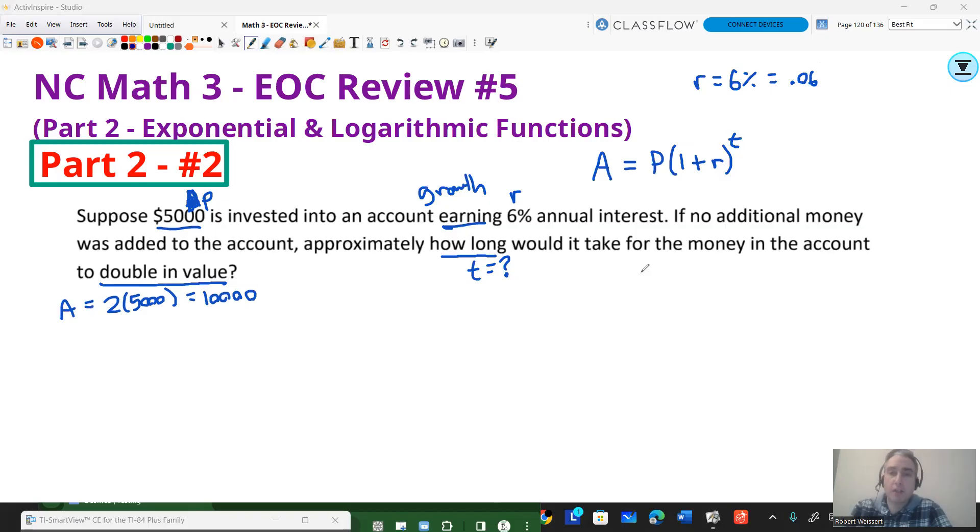We do know that r is going to be 6%. So 6% as a decimal is 0.06. I know my initial amount is 5,000. So I know that that's my P. And I want to know how long is it going to take for the amount to double in value? So double is two times. So two times 5,000 is going to give you 10,000. So I actually know my final amount as well. So I can actually solve this.